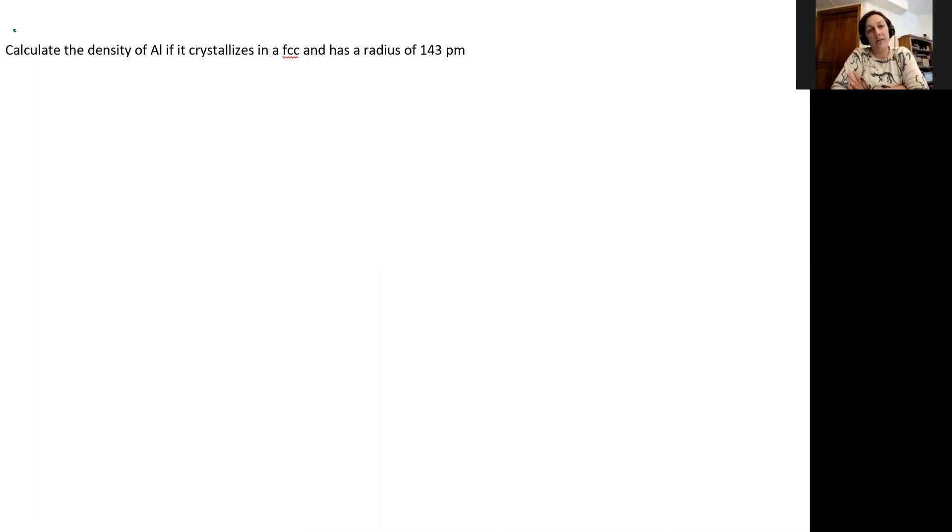In this video, we're going to walk through the solution to our last practice problem in Chapter 10, and this is asking us to calculate the density of aluminum as it crystallizes in a face-centered cubic arrangement, and we have a radius of 143 picometers.